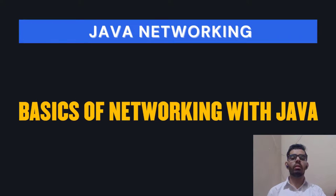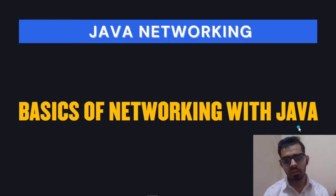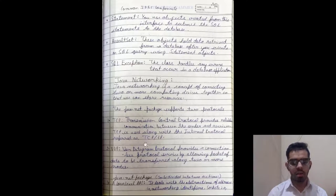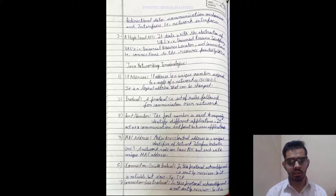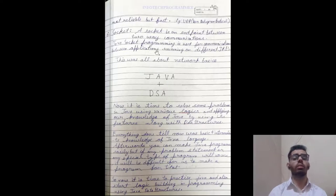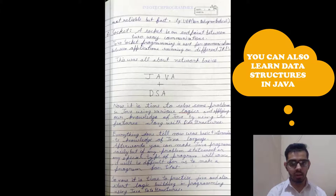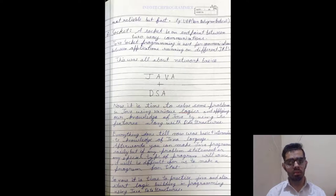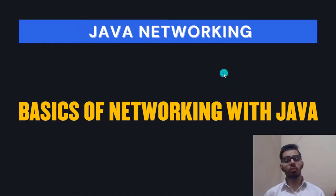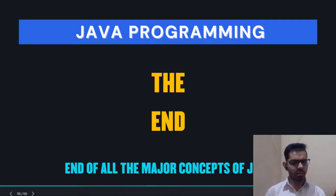After JDBC, there is Java networking. You must know the basics of networking in Java — TCP, UDP, java.net, sockets, and more. This completes all the major concepts of Java, and you can also cover data structures in Java afterward. This was an overview of my notes, following the complete Java programming roadmap from start to finish.